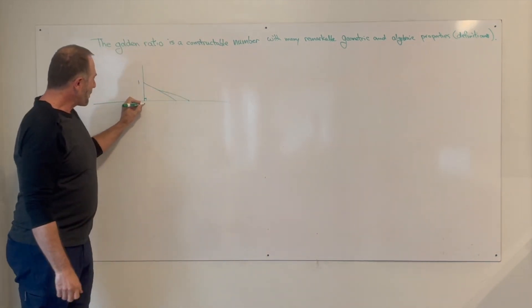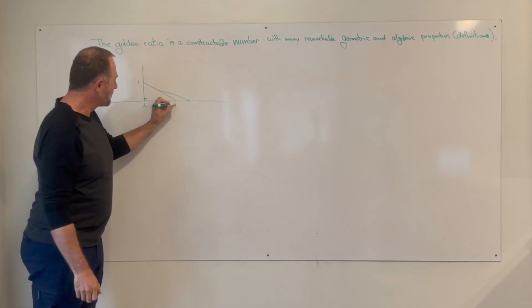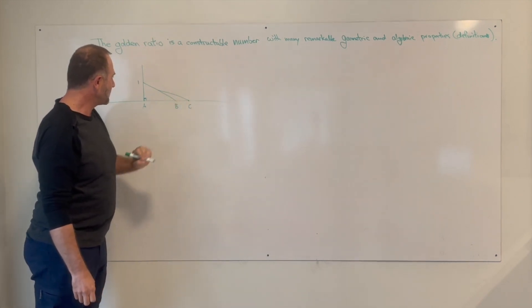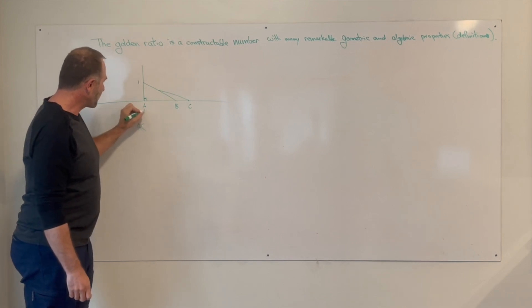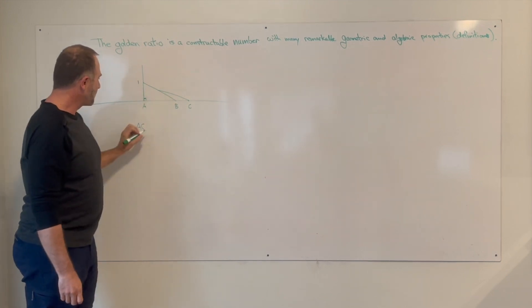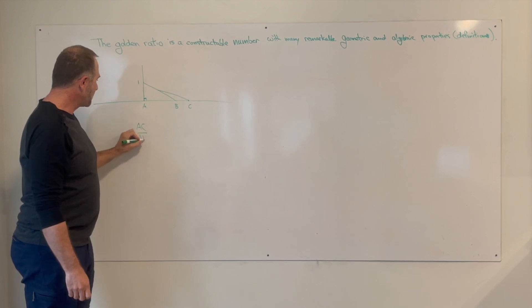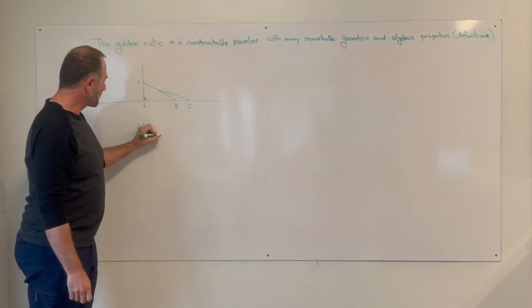If we label the three points A, B, and C, then the ratio from A to C, the length from A to C, divided by the length from A to B, equals the golden ratio.